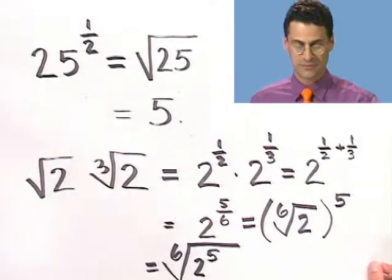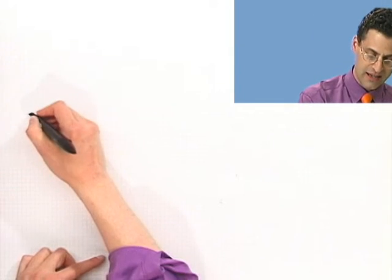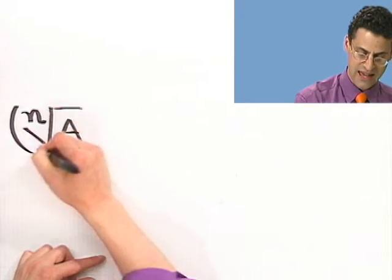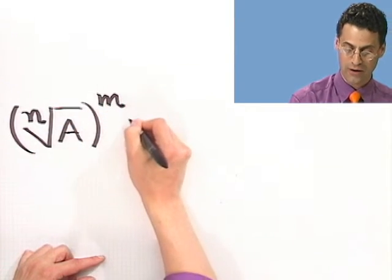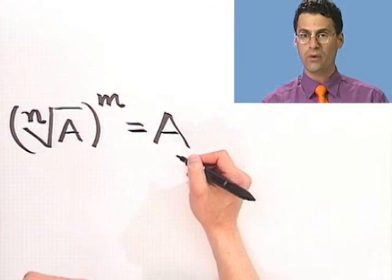And the general principle is the following. If you take the nth root of a number and then raise that to the mth power, I could write that as a fractional exponent, as A to the what over what? Well, m is the power and n is the root.